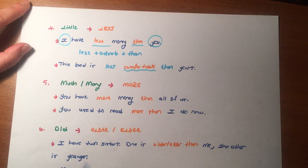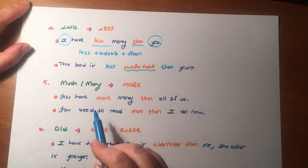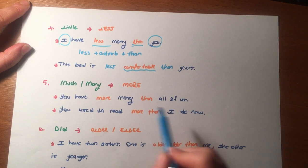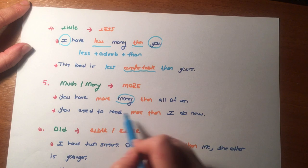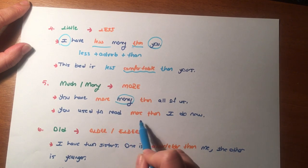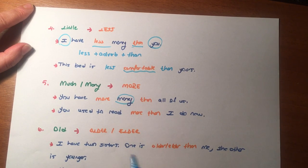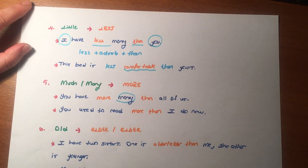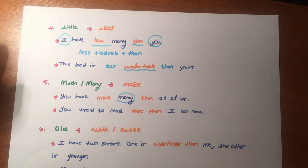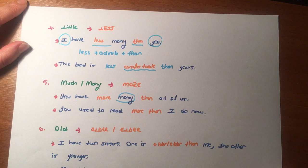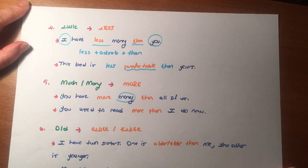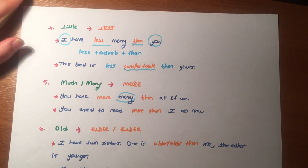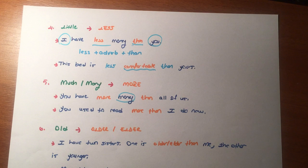Much/many — more. You have more money than all of us. You used to read more than I do now — benim şu an okuduğumdan daha çok okuyordun dedik; ikisini karşılaştırdık.